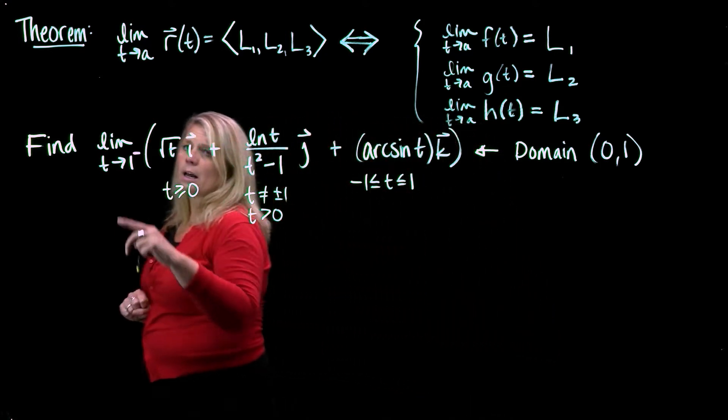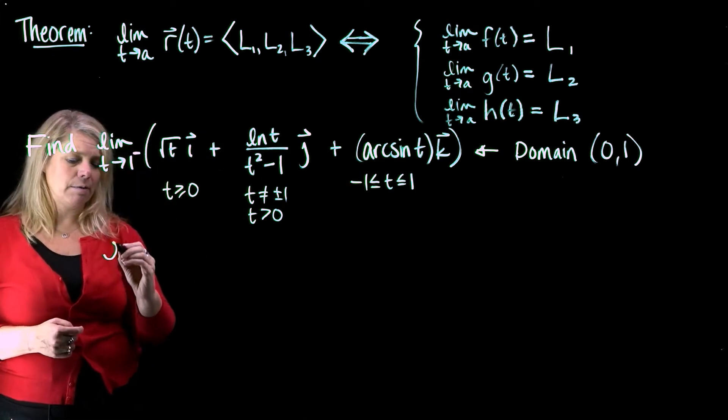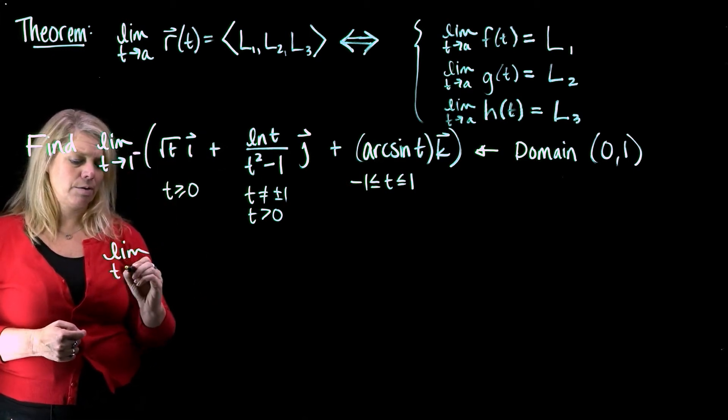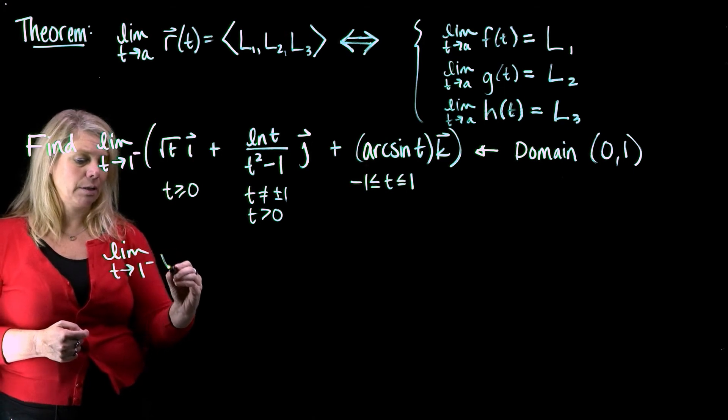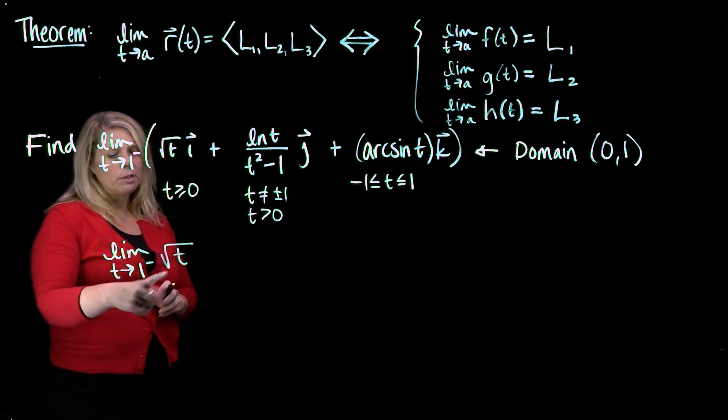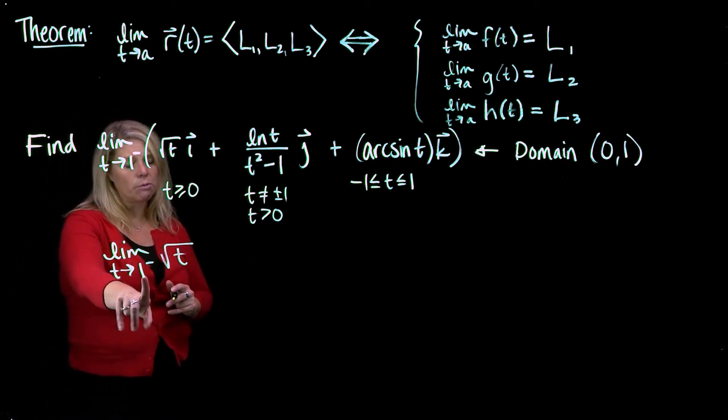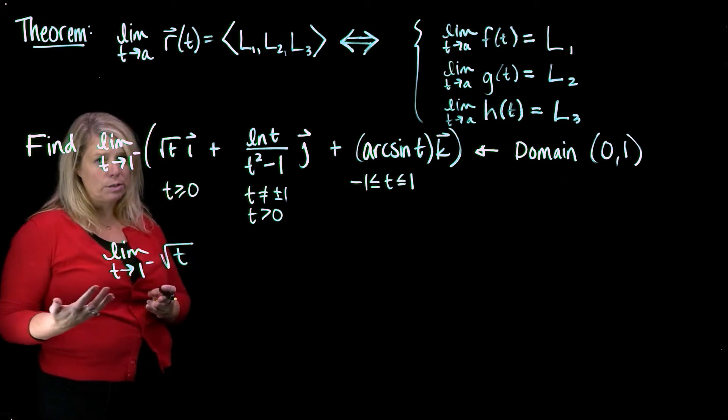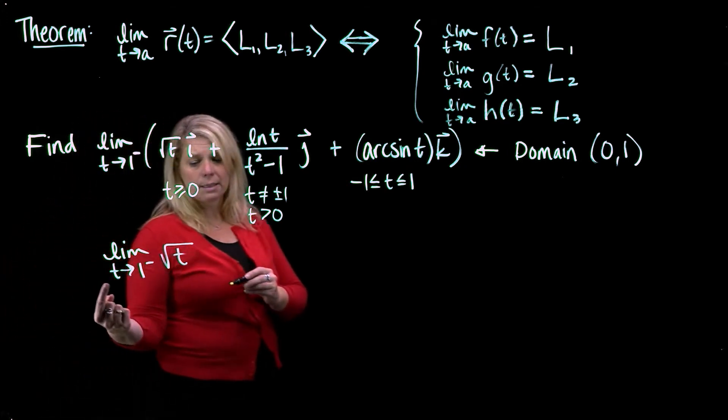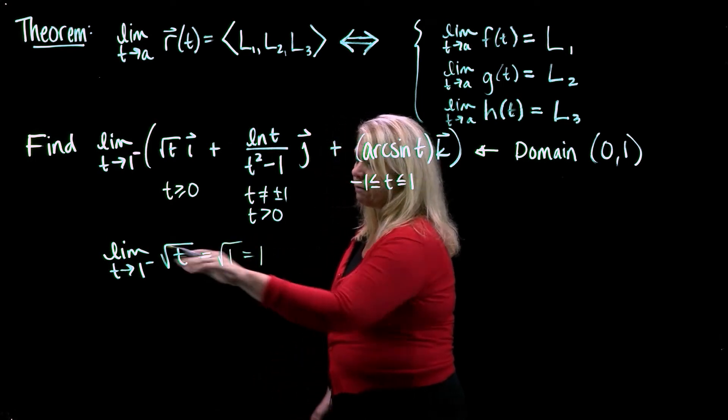Okay, so then this theorem tells us we can consider limits of each of these three component functions. So the limit as t approaches 1 from the left of square root of t. So I'm going to consider that first. The square root function is well-behaved around t equals 1. This is a limit where you can actually use a substitution shortcut. So this limit will just be square root of 1, which is 1 for this first limit.